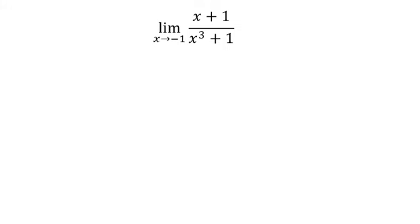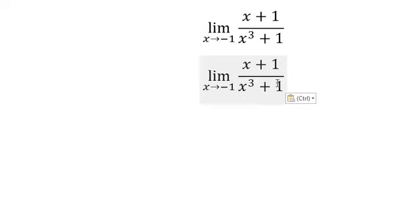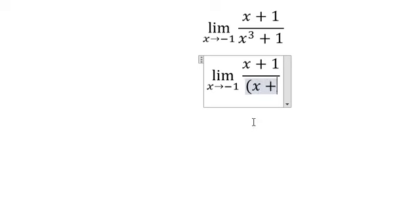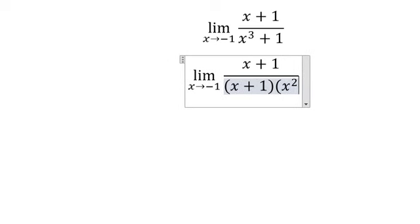Hello everybody. Today I will talk about calculus — the topic is about iteration and limit. Now I will show you the answer about this one. We can put (s + 1) multiplied by (s² - s + 1).